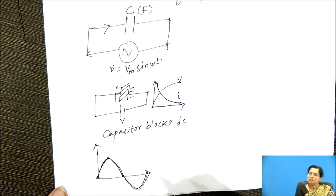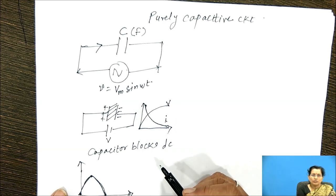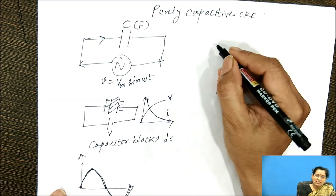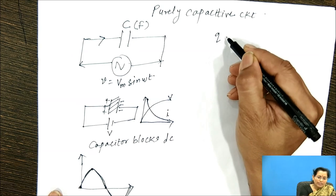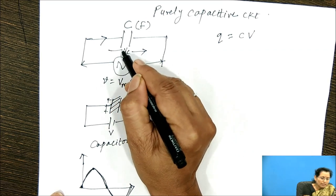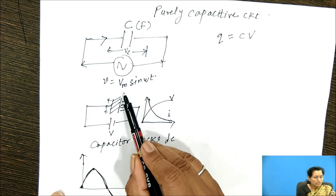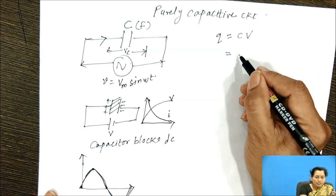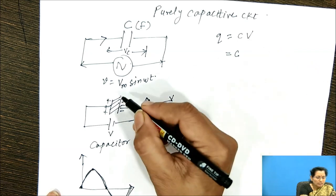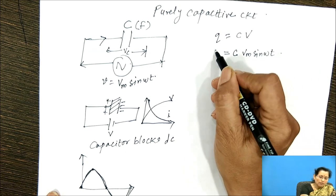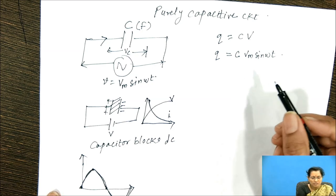That's why capacitors are used in filter circuits. Now if we connect AC voltage V equal to Vm sin omega t to this capacitor, the charges Q move through the circuit, given by Q equal to C into V, which is C into Vm sin omega t. The voltage Vc developed across the capacitor is nothing but the applied voltage Vm sin omega t. So the equation becomes Q equal to C Vm sin omega t.